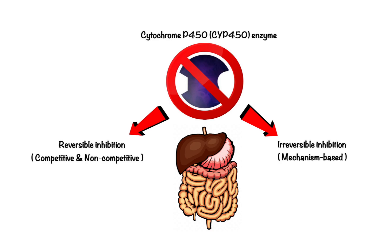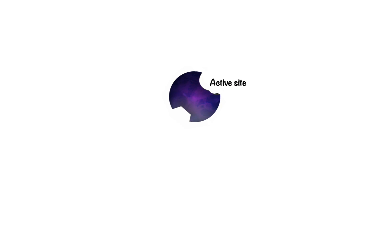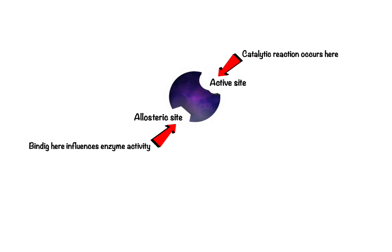To understand the various types of drug metabolism inhibition, first we must review the concepts of active and allosteric sites, substrates, and inhibitors. The active site is a physical space or pocket within an enzyme's protein structure where a molecule can bind and where a catalytic reaction occurs to convert a metabolite. The allosteric site is a separate physical space or pocket within an enzyme's protein structure. It enables molecules to influence enzyme activity, and depending on how they do so, these molecules can be allosteric activators or allosteric inhibitors. Drugs can bind to this site and alter the three-dimensional structure of the enzyme.